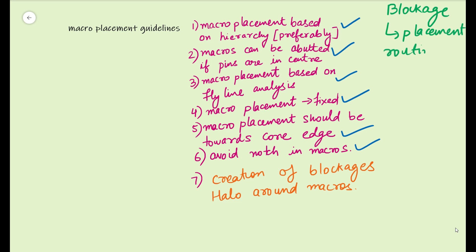You can have routing blockages so that the tool won't route over the area wherever you specify the blockage. For routing blockages, you have to specify the routing layer — if you specify a particular layer in that area, there will be no routing on that layer. You can also have placement blockages, and in the previous video we have seen different types of placement blockages.